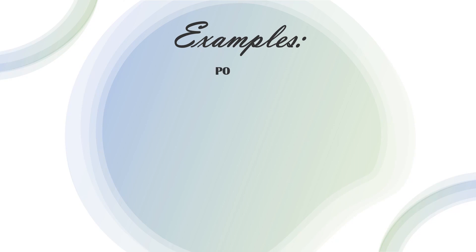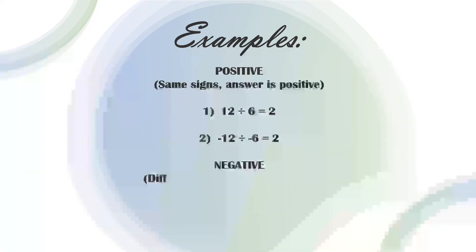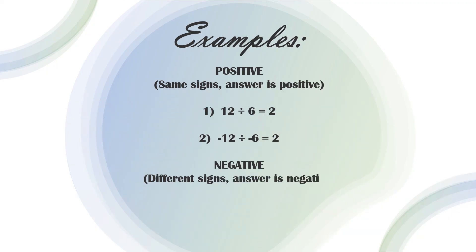Same here in division — positive, same signs, answer is positive: 12 divided by 6 equals 2; negative 12 divided by negative 6 equals 2. Different signs, answer is negative: 12 divided by negative 6 equals negative 2; negative 12 divided by 6 equals negative 2.